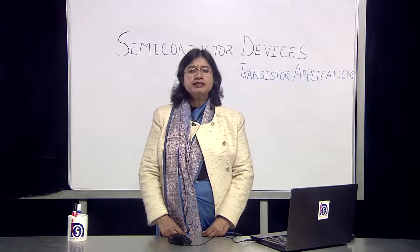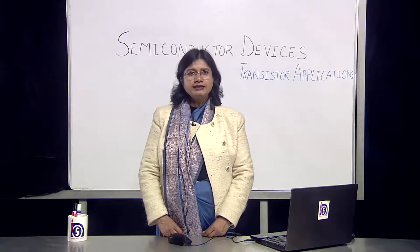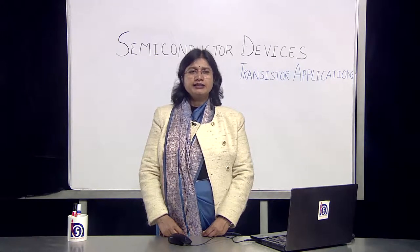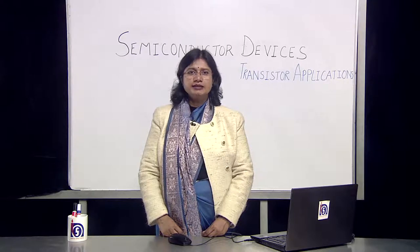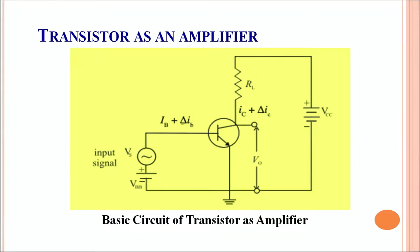To understand the working of a transistor as an amplifier, let's understand the circuit diagram and discuss the working of the transistor as an amplifier. This is a basic circuit of a transistor as an amplifier. Looking at this circuit, the transistor is connected in a common emitter configuration, which means that the emitter is common to the input as well as the output circuit.